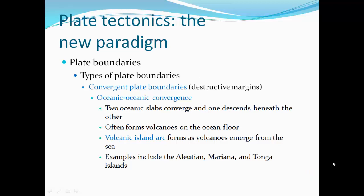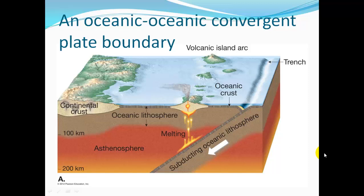Where ocean and ocean plates converge, one slab will still descend below the other. This often forms volcanoes on the ocean floor. These form volcanic island arcs when the volcanoes get tall enough to reach above the ocean surface. Examples include the Aleutian Islands, the Mariana Islands, and the Tonga Islands. Here's a diagram showing two ocean plates converging — one subducts, and partial melting rising up forms a chain of volcanic islands.